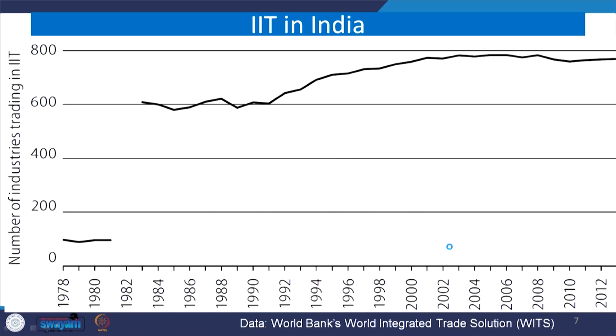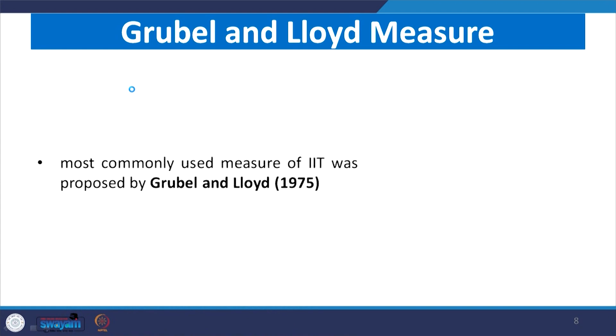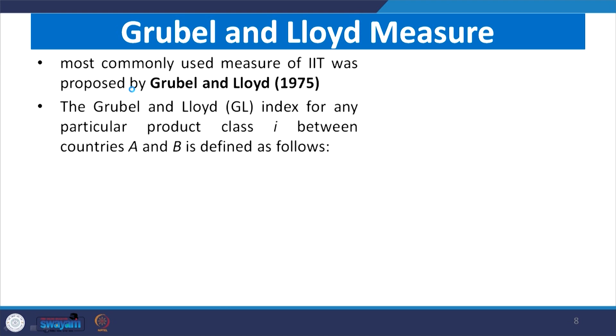However, horizontal IIT and export of high-technology goods have gained some momentum, especially after 2008, from the recent crisis period. Looking at the latest figures of India's intra-industry trade, you can easily find the percentage rise in different years from the World Integrated Trade Solution data by the World Bank. There is a gap in the data due to unavailability of cases related to intra-industry trade. The chart discusses the number of industries trading in relation to intra-industry trade.